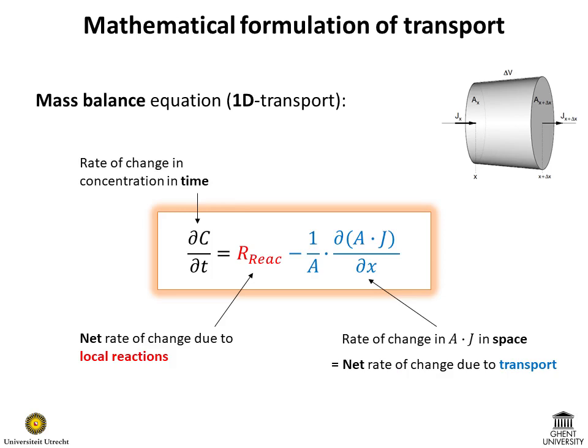We conclude that when we combine the effects of reactions and transport, we obtain the following general form of the mass balance equation. The concentration of the component changes in time at a rate that has two contributions. One is determined by the rate of the reactions with other components in the system at the same location, and the other one is proportional to the variation of the flux in space. Note that a similar mass balance equation is formulated for each component in the system.